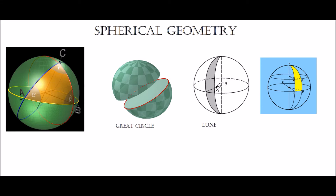First, let's get our definition of a spherical triangle straight. So in this picture, triangle ABC is a spherical triangle. A spherical triangle is quite obviously a triangle which is mapped onto a sphere, but which is bounded by three great circles. In this case, triangle ABC is bounded by the yellow great circle, the red great circle, and the blue great circle.